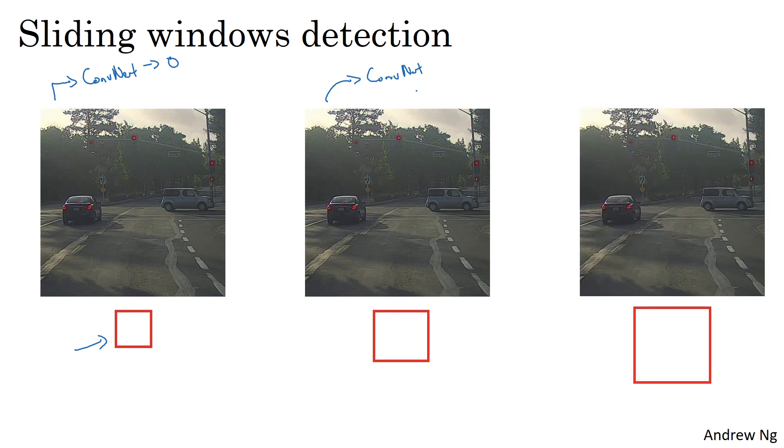Then you might do it a third time using even larger windows. The hope is that if you do this, then so long as there's a car somewhere in the image, there will be a window where, for example, if you're passing in this window into the ConvNet, hopefully the ConvNet will output 1 for that input region, so then you detect that there is a car there.